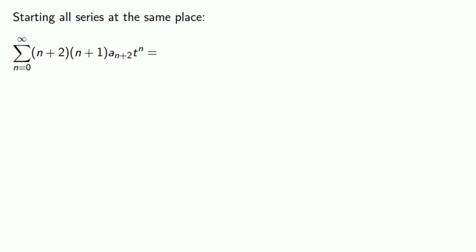So in order to start this series at n equals 2, we have to split off the n equals 0 and n equals 1 terms. So if n equals 0, the term of this series is going to be... And if n equals 1, our corresponding series term will be...